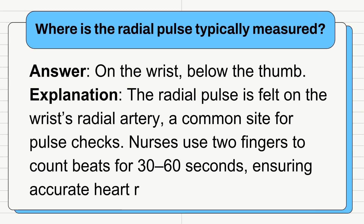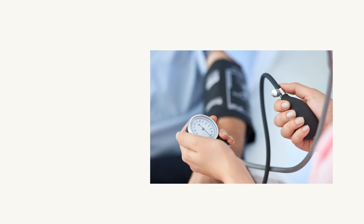Question 6: Where is the radial pulse typically measured? Answer: On the wrist, below the thumb. The radial pulse is felt on the wrist's radial artery, a common site for pulse checks. Nurses use two fingers to count beats for 30 to 60 seconds, ensuring accurate heart rate data.